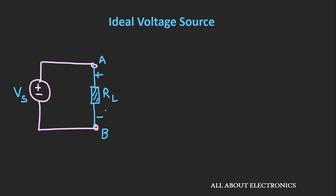The current drawn through this voltage source depends upon the load resistance. The current I can be given as Vs divided by Rl, where Rl is the load resistance. As the value of Rl decreases, the current drawn increases. In the ideal voltage source, there is no limit on the amount of current that can be drawn through the source.